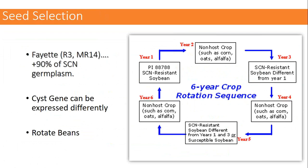Once the right bean is selected, it's important to protect it from cyst nematode. Most soybeans have the same cyst traits, but they're expressed differently in every bean. When going from year one soybeans to corn and back to year three soybeans, we need to switch to a different genetic family so we don't build tolerance and have root feeding. It's very important to not only select the right bean but to truly rotate it.